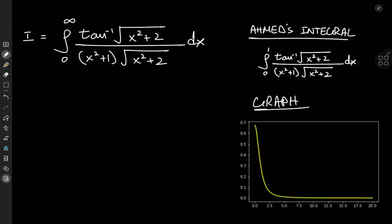Today we have this absolute beast of an integral, inspired by Emmett's integral, which has exactly the same monstrous integrand but with the upper limit being 1 rather than infinity. It turns out our target integral has a pretty cool solution using Feynman's trick, so that's exactly how we're going to solve it.